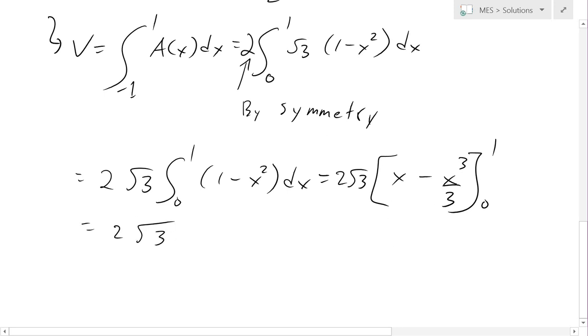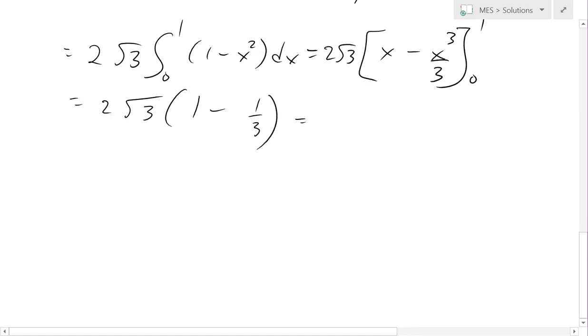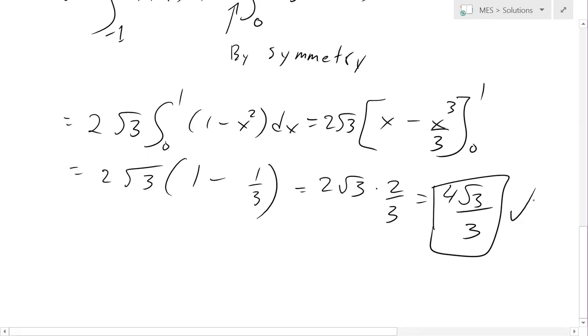So now we just plug that in. We've got 1 minus 1 over 3. This equals 2, this is going to be 3 over 3 minus 1 over 3. That's just square root 3 times it by 2 over 3. And this equals to 4 times square root 3 over 3. You could just leave it like that. And that's our final answer right there.